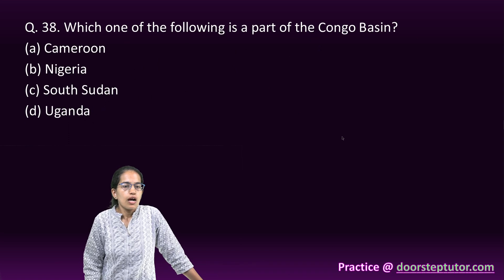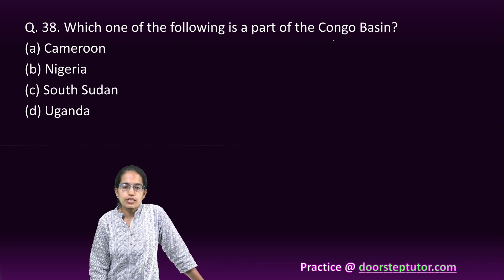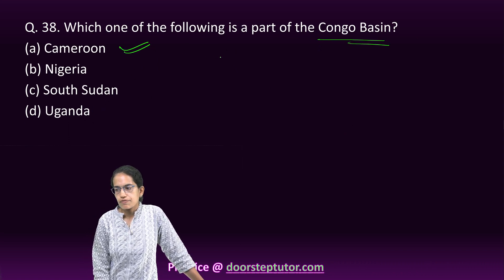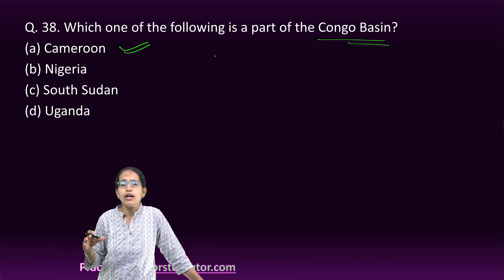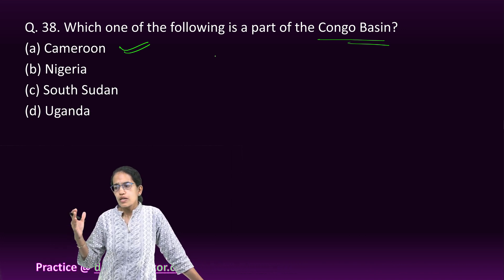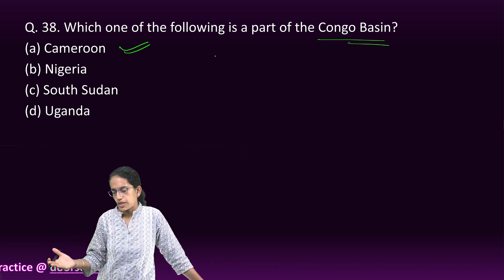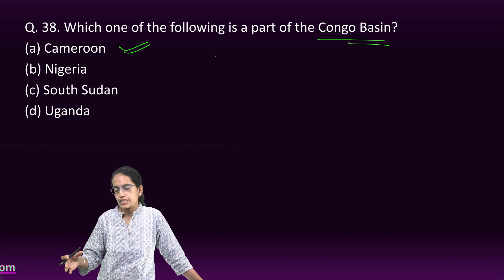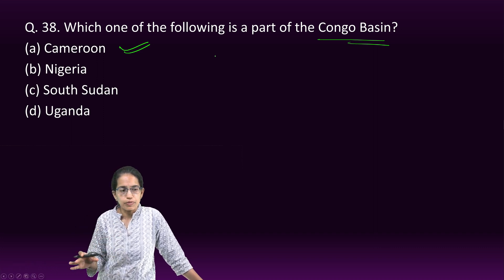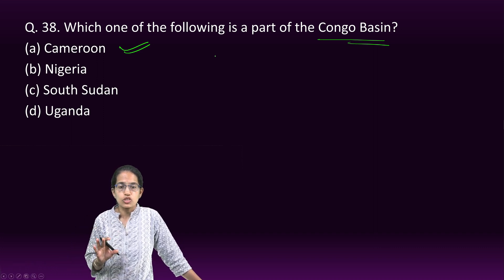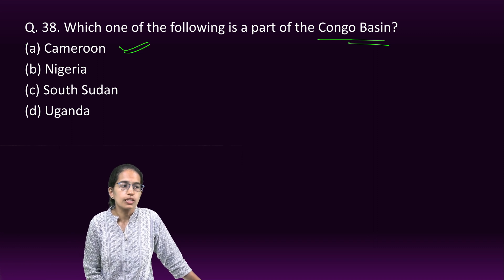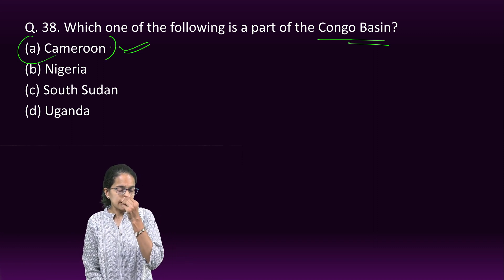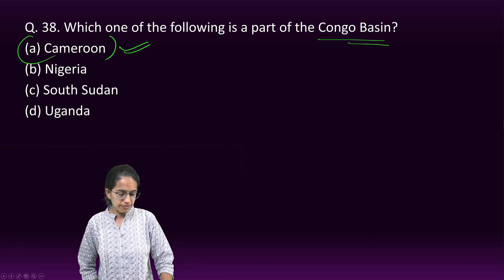The next question asks which countries are part of the Congo Basin. The Congo Basin includes Cameroon, Equatorial Guinea, Gabon, the Democratic Republic of Congo, the Republic of Congo, and the Central African Republic. Among the given choices, Cameroon is the correct answer. This section is well covered in G.C. Leong.